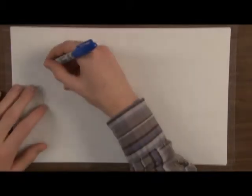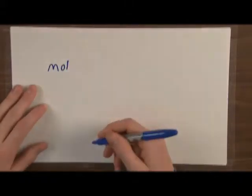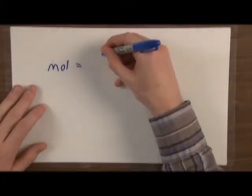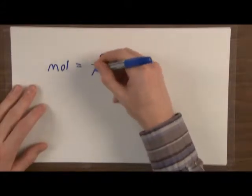Now that we have an understanding of what the mole is and where it comes from, let's talk about the generic mole formula as it applies to equations you're actually going to do in chemistry class. Our formula is: number of moles — typically denoted mol — is equal to our mass in grams divided by molar mass.